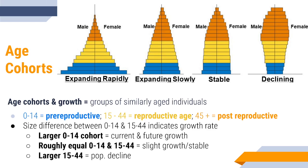If the pre-reproductive group is roughly equal to the reproductive age group, that means those individuals are more or less replacing themselves and we're going to see a stable population or some slow growth. If the pre-reproductive group is the smallest cohort, as you can see all the way on the far right, that means that population is likely to be declining in the future.